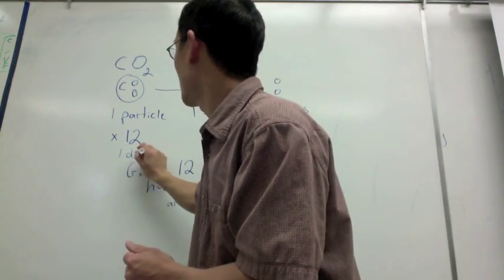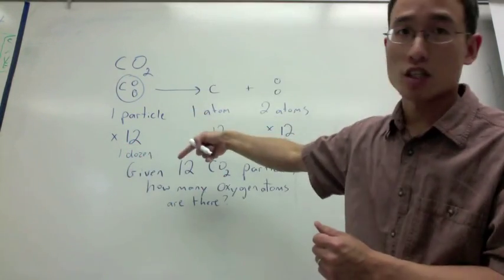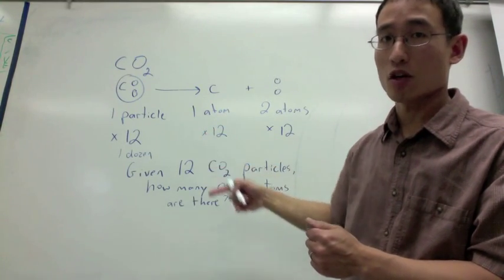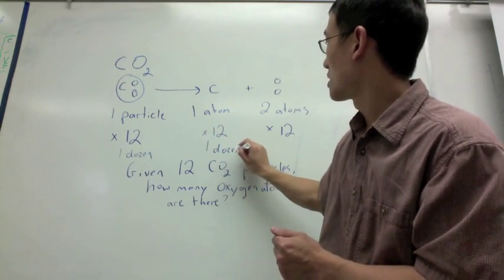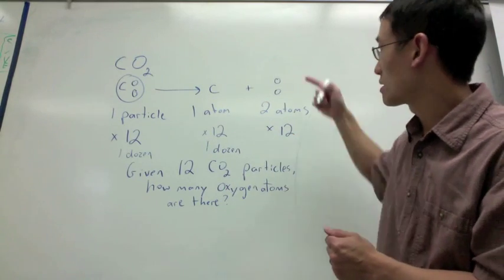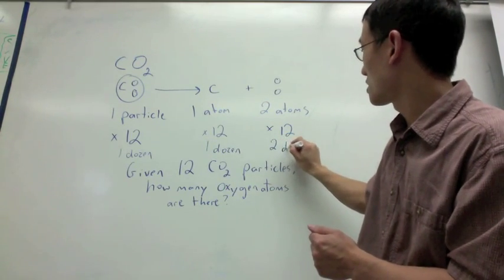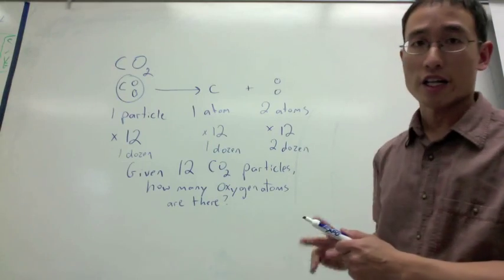So you can see that this is one dozen. Given a dozen CO2 particles, I would have one dozen carbon atoms coming out of that and two dozen oxygen atoms.